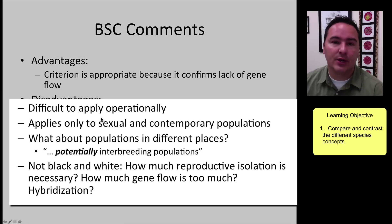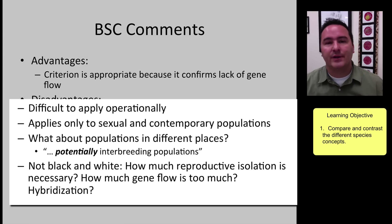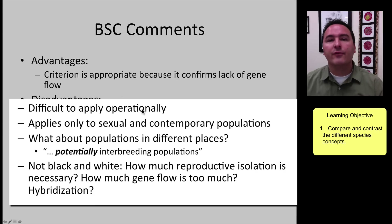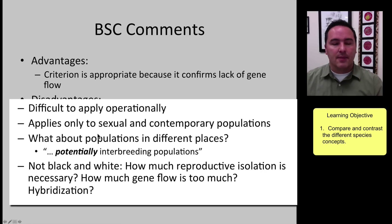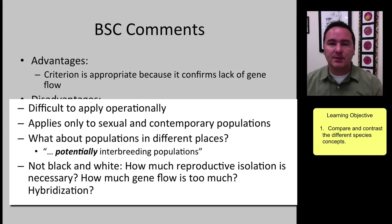The disadvantage is that it's very difficult to apply operationally. For a group of elephants this isn't a big deal because you can track each individual elephant and see which one is reproducing with which. But if you tried to track fruit flies in the Hawaiian rainforest, that's a little bit more difficult to do.